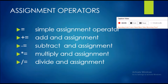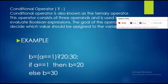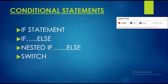Moving to assignment operators, these are the five basic types used in Java programs. Apart from primary operators, we also have the ternary conditional operator. This operator consists of three operands and is used to evaluate boolean expressions — you may have heard of boolean expressions in programming. It can be used for tasks like swapping two values.